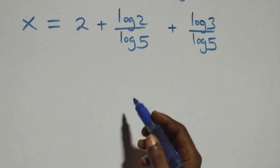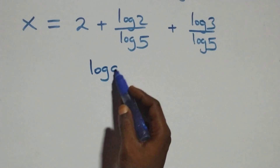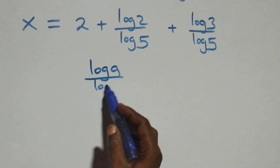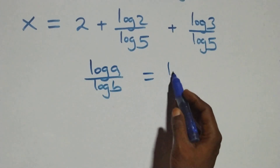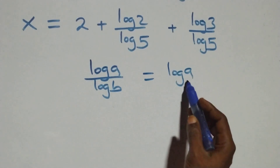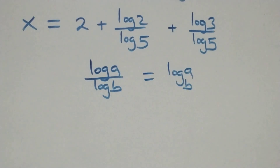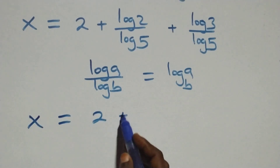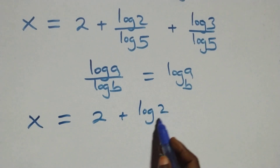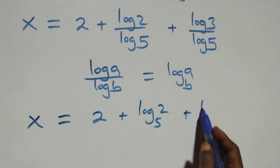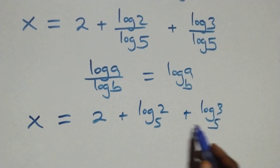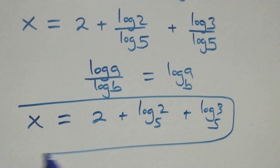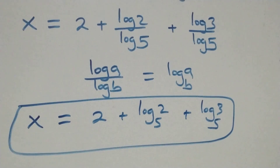We apply the change of base formula: log a over log b is the same as log a to base b. So the final answer is x equals 2 plus log₅2 plus log₅3.